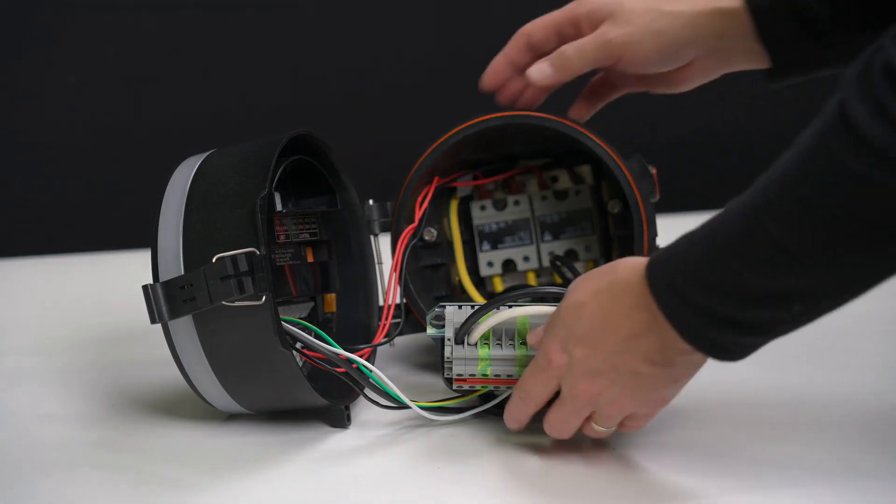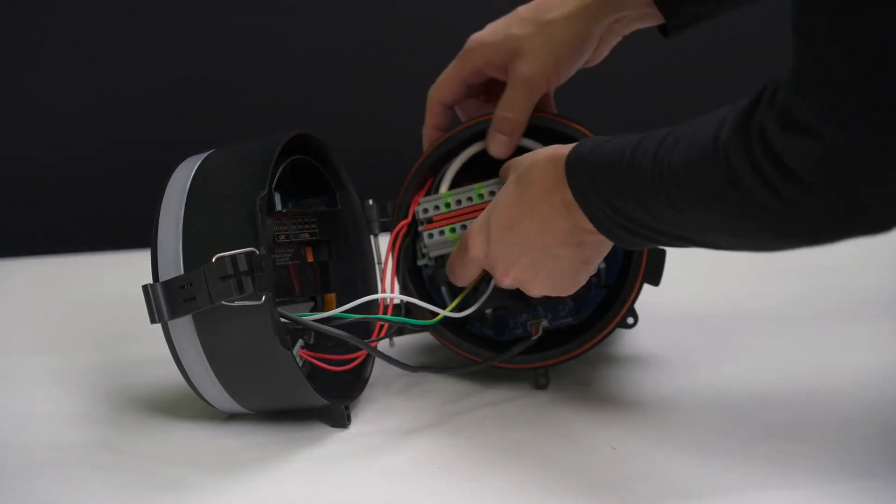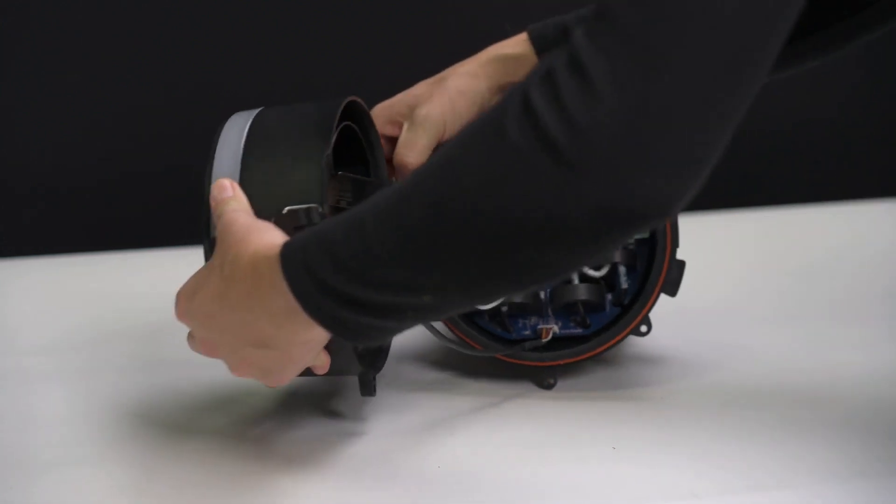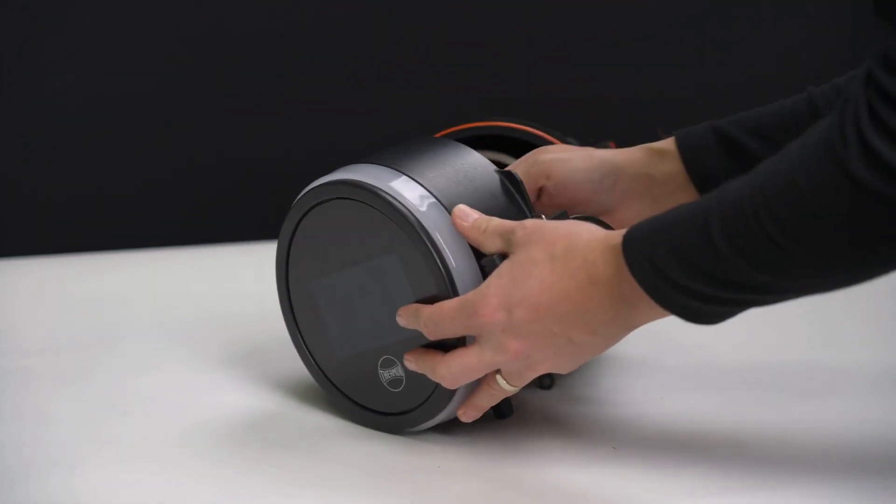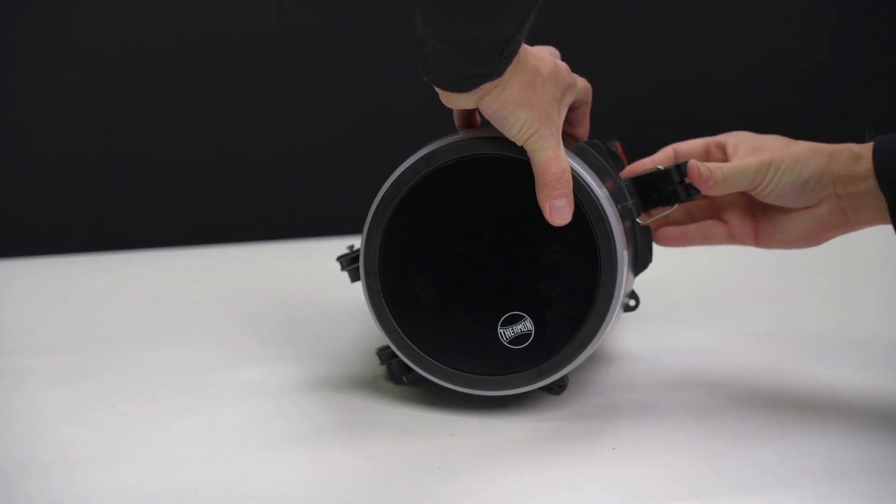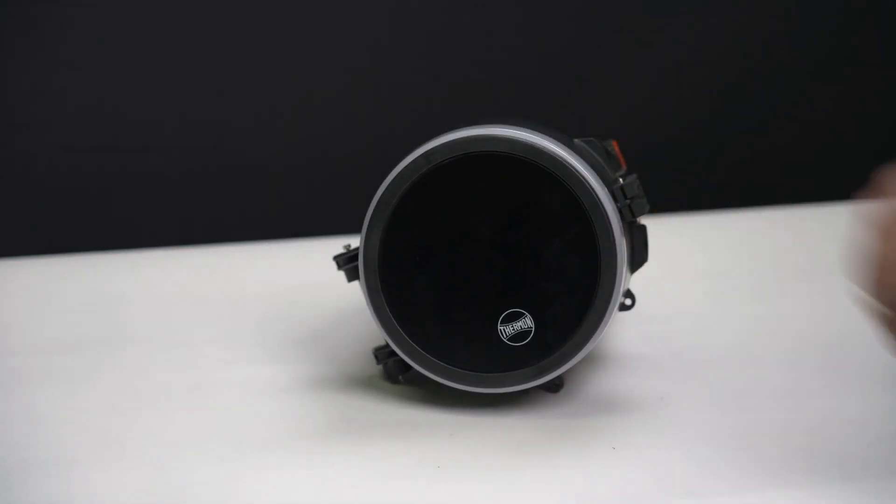Now that the unit is prepped, lay the CT board in, close the cover. Be sure not to pinch any wires. We can now move on to installation.